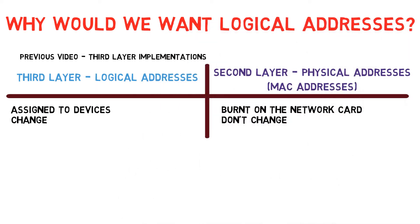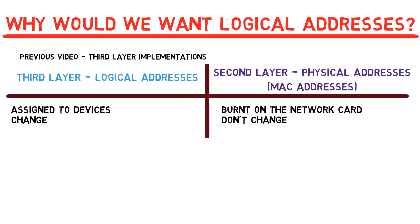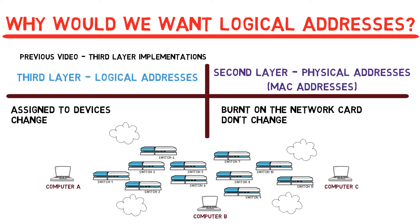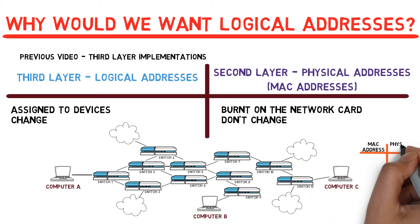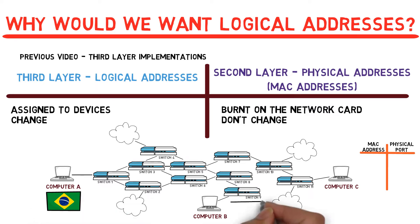Why would we want logical addresses? Aren't physical addresses enough? Let's consider a world without logical addresses, where all endpoint devices on the internet were connected via switches. Given the way switches operate — a switch holds a table mapping MAC addresses to physical ports to forward frames to the correct port — if we want a message from computer A in Brazil to reach computer B in England, then all switches along the way would need to store B's address. If we want that to work for all devices in the world, every switch would have to store a table with all MAC addresses in the world, which doesn't make much sense.